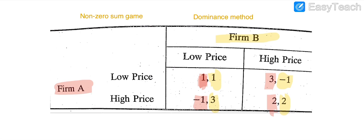Firm A has two types of strategies it can follow: low price or high price. First, if Firm A adopts the low price strategy, it has the payoff of 1 million dollars. If Firm A charges a low price and Firm B also adopts the low price strategy, then Firm A will earn 1 million dollars.